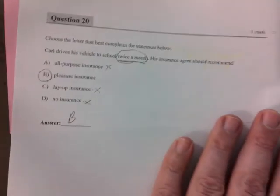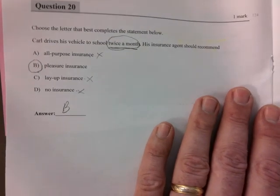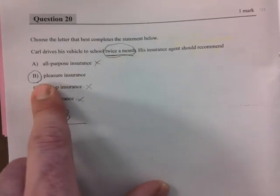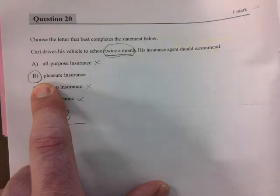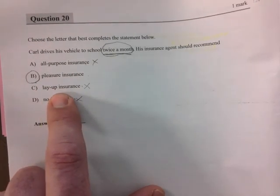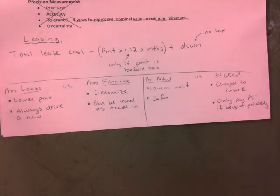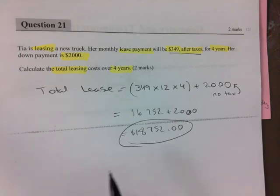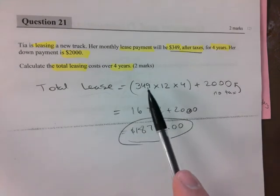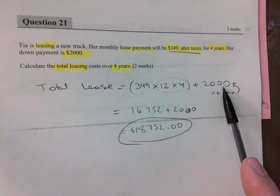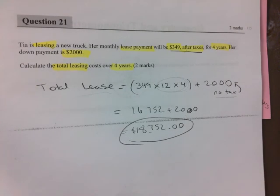Last, last two questions here. You need to have some insurance knowledge. Maybe go back. If you're only driving twice a month, pleasure is the best one. Because you can still drive a little bit, but not every day. All purpose would not be a good one because you would pay more. Layup is when you park it and no insurance. It works back where I come from, but not here. Paraguay, most people did not have insurance. Total lease. There were taxes already included. So just go 349 times 48. That's the number of months. Plus 2,000. No taxes on that either. 18,752.